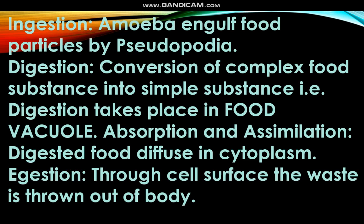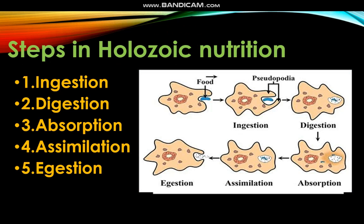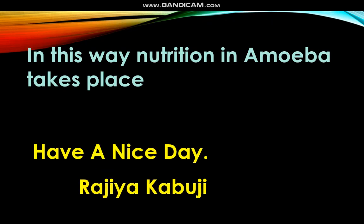The remaining unwanted material that is not required by the amoeba is taken to the cell surface and thrown out. This is called egestion. In this way, nutrition in amoeba is completed through five steps: ingestion, digestion, absorption, assimilation, and egestion. Have a nice day ahead.